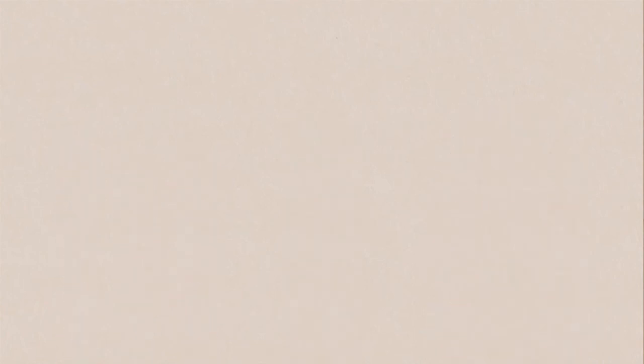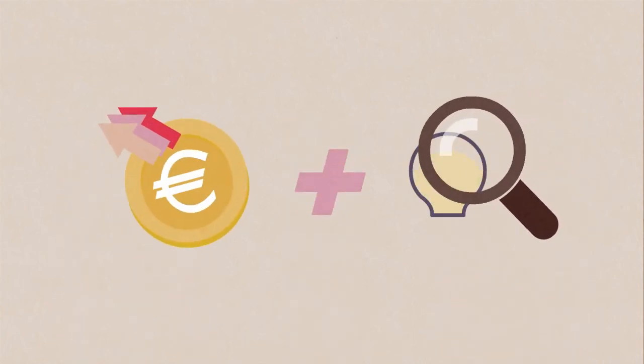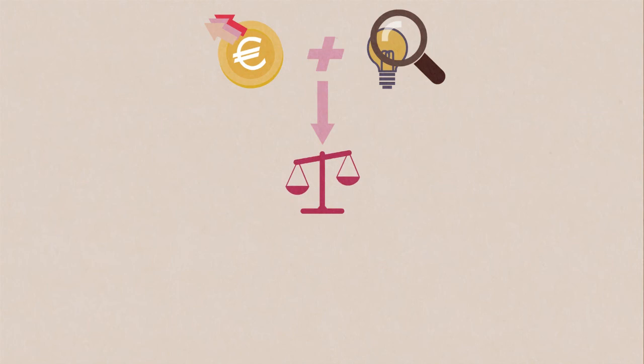So the experts recommend combining redistributive policies with pre-distributive policies. These latter policies go to the origin of poverty and guarantee that everybody has the same opportunities of education and development.